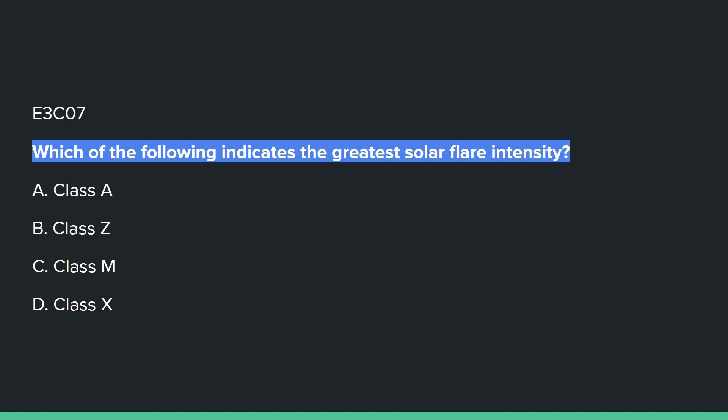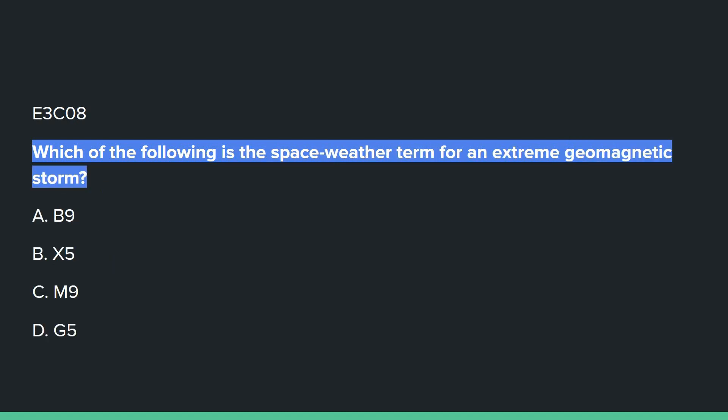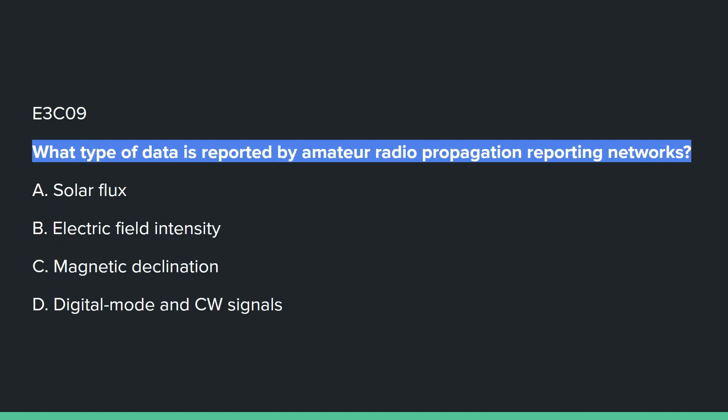E3C07: Which of the following indicates the greatest solar flare intensity? D: class X. E3C08: Which of the following is the space weather term for an extreme geomagnetic storm? D: G5. E3C09: What type of data is reported by amateur radio propagation reporting networks? That's D: digital mode and CW signals.